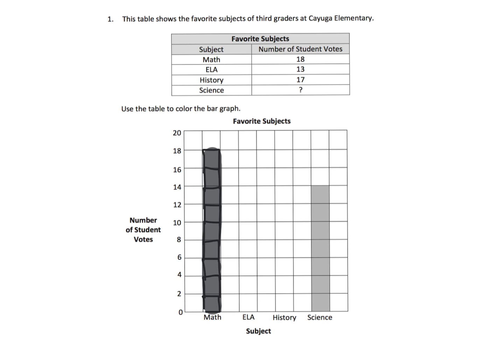English Language Arts has 13 students. Notice we don't have a 13 on the scale — we have 12 and 14 — so our answer is going to be half of that square, right in between 12 and 14. We count up: two, four, six, eight, ten, twelve, and then we can't do a complete box because that would bring us to 14, so we only want half of that box. Now we can shade that in neatly.